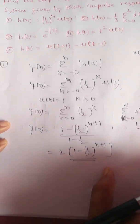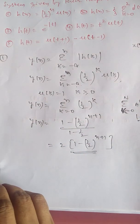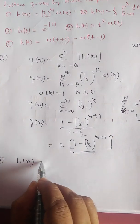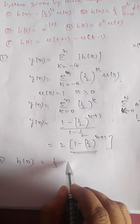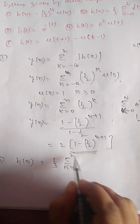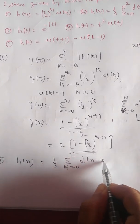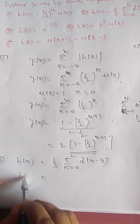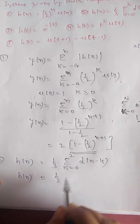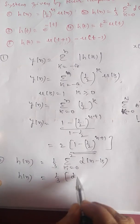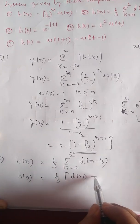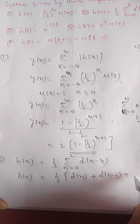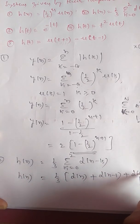Similarly, to find the step response of the second problem: h[n] = (1/3) summation k from 0 to 2 of δ[n−k]. Let us expand this: h[n] = (1/3)[δ[n] + δ[n−1] + δ[n−2]].